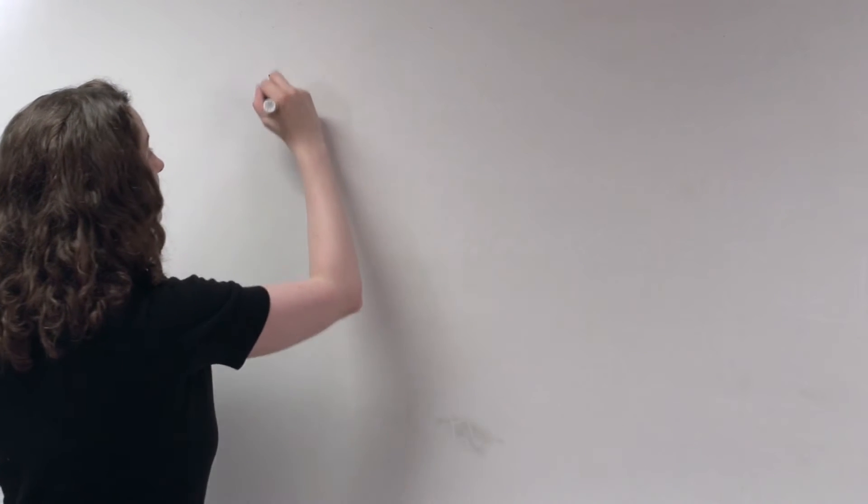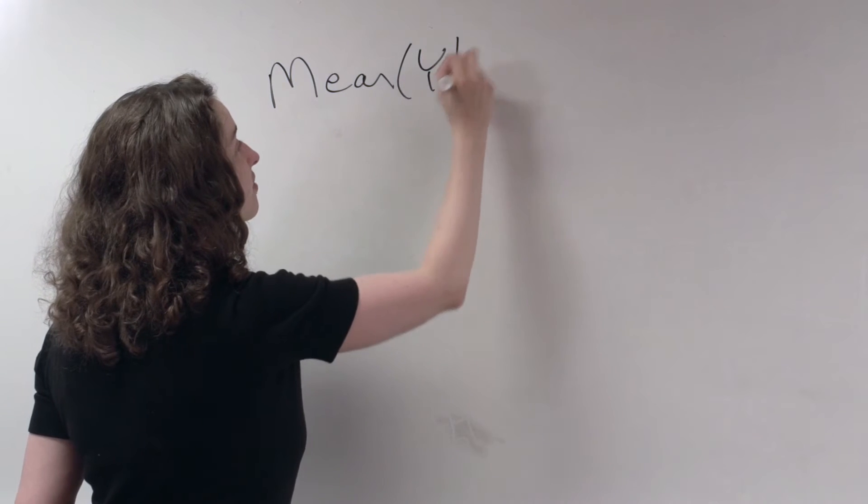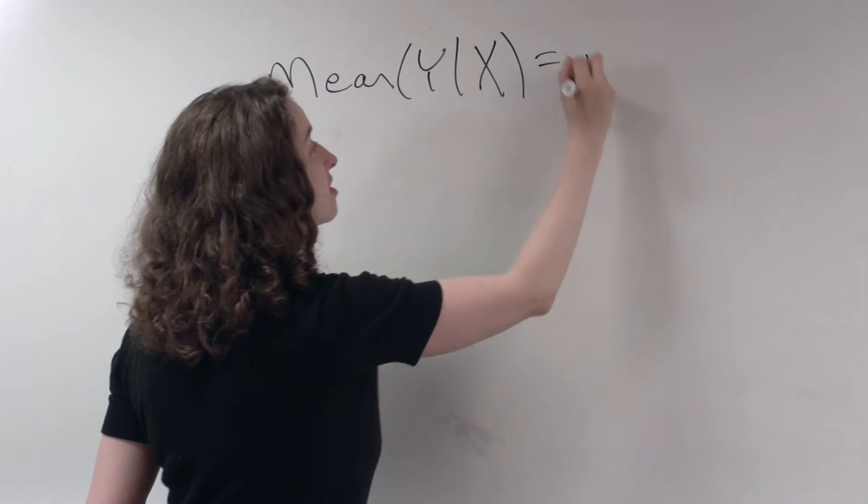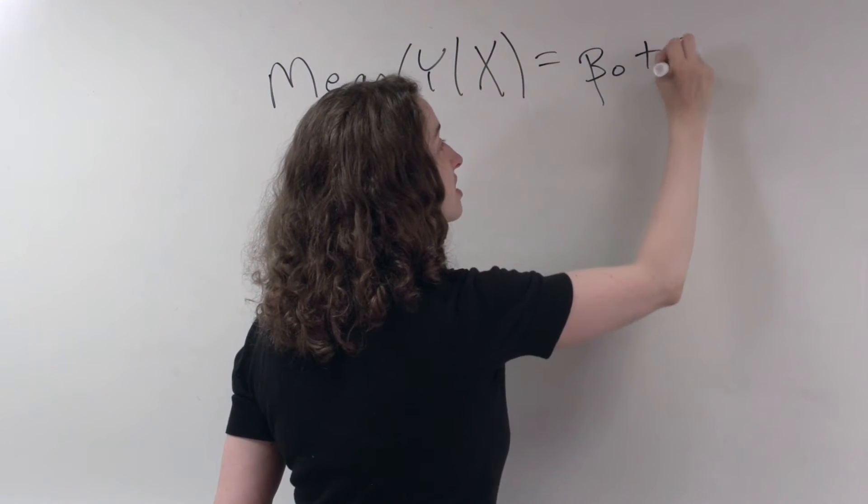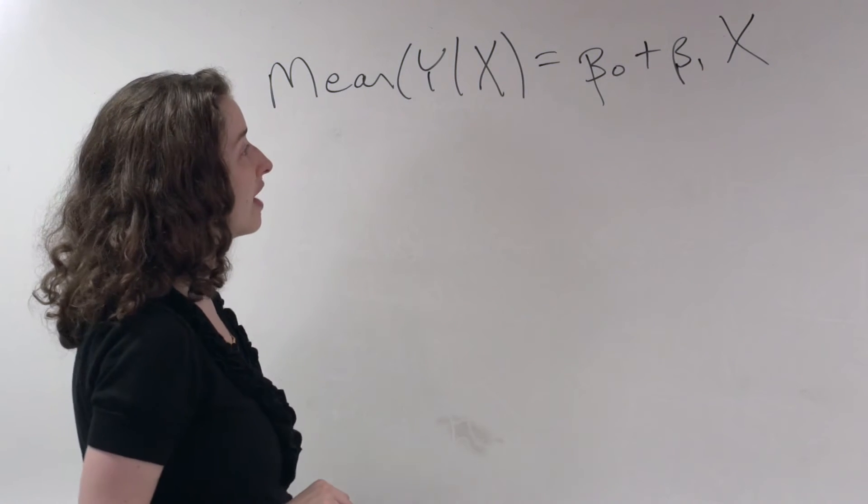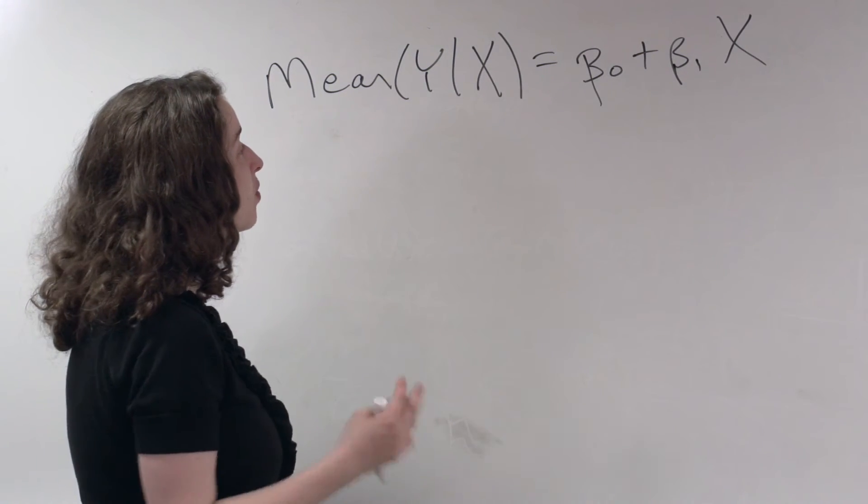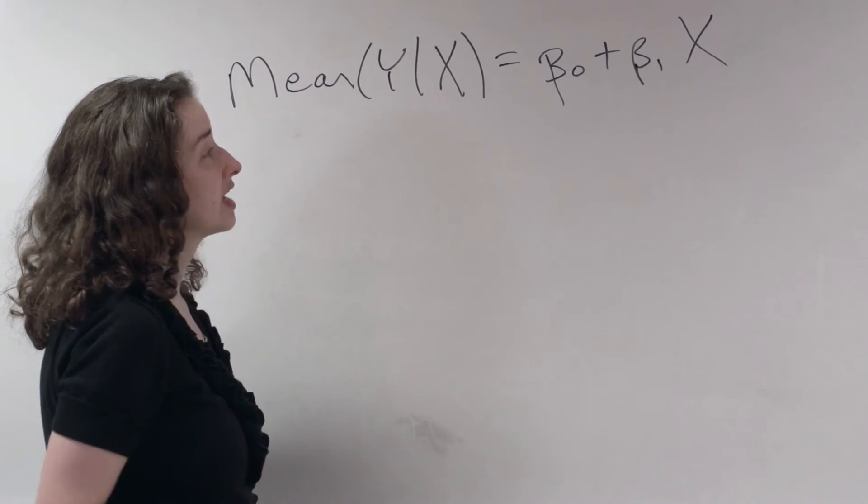Before we do that, I want to make sure it's crystal clear what statement we can make when we think about the original scale. So let me just write down the equation for a simple linear regression. What we're saying is that the mean of Y given X follows a linear pattern with some intercept and some slope.